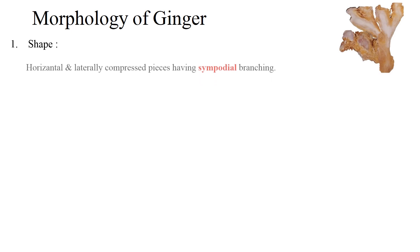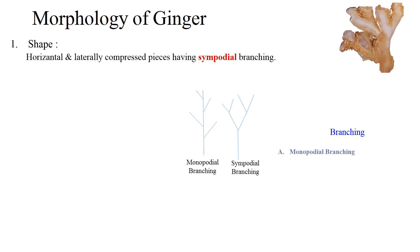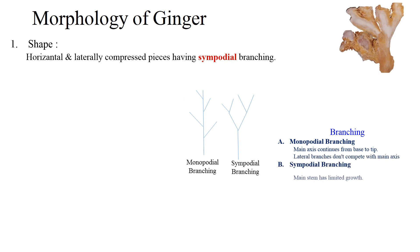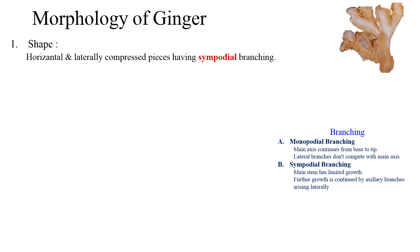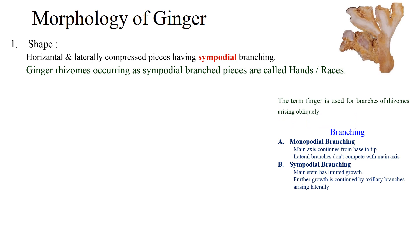Morphology of ginger. Shape: ginger occurs as horizontal and laterally compressed branched pieces having sympodial branching. Branching is of two types: monopodial branching and sympodial branching. In monopodial branching, the main axis continues from base to tip and lateral branches do not compete with the main axis. In sympodial branching, the main stem has limited growth and further growth is continued by auxiliary branches arising abruptly. Ginger rhizome occurring as sympodial branched pieces are called hands or races. The term finger is used for the branches of rhizome arising abruptly.